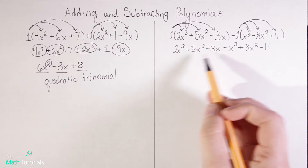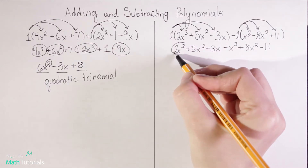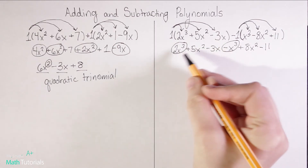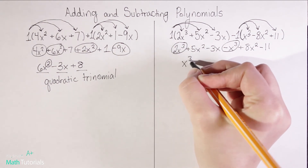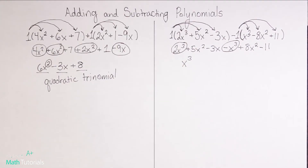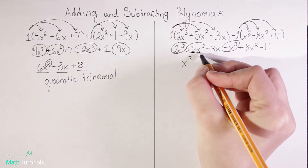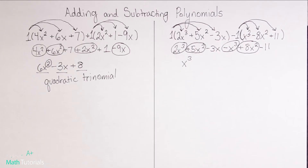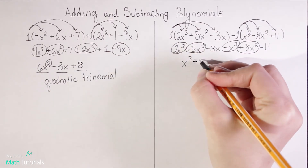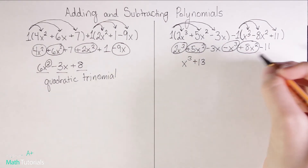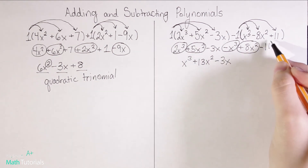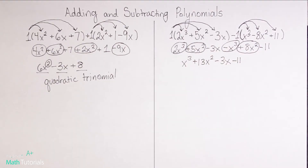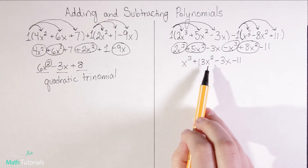Now that we've gotten all that out of the way, let's combine our like terms. I've got 2x cubed and negative x cubed — 2 minus 1 is just 1, so it's just x cubed. Next, positive 5x squared and positive 8x squared — 5 plus 8 is positive 13x squared. Then there's just negative 3x to the first power with nothing to combine with, so it stays the same. And the constant negative 11 also stays the same.